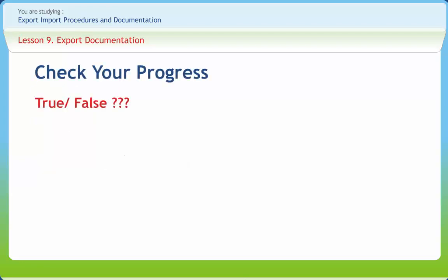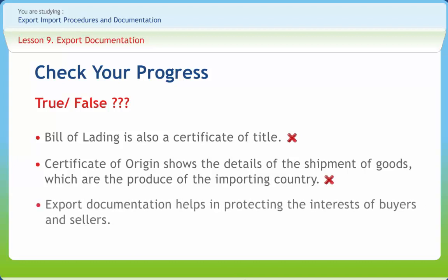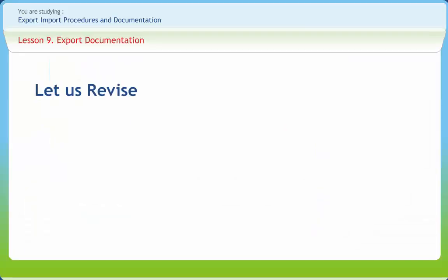Now let us check our progress. Bill of lading — is it also a certificate of title? Wrong. Certificate of origin shows the details of the shipment of goods which are the produce of the importing country — right or wrong? Wrong. Export documentation helps in protecting the interests of buyers and sellers — right or wrong? Wrong.